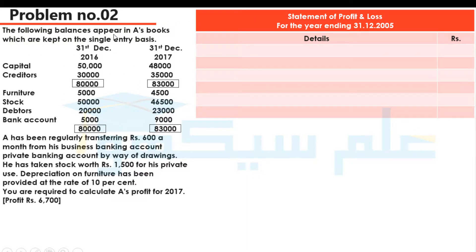The following balances appear in A's books, which are kept on the single entry basis. Here we have opening balances and here closing balances. Opening capital is Rs. 50,000, creditors are Rs. 30,000, and if we total them, this will come to Rs. 80,000. In assets we have furniture Rs. 5,000 opening.